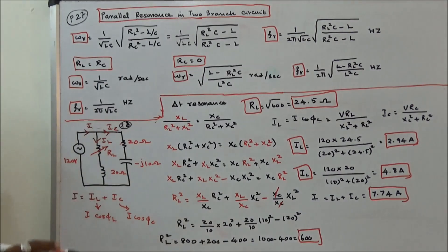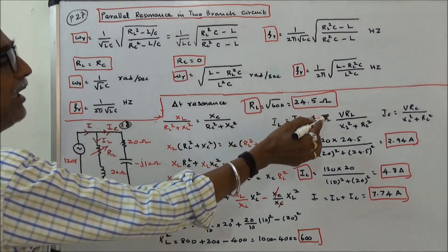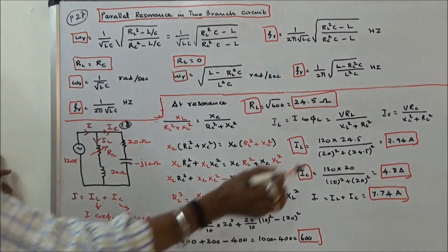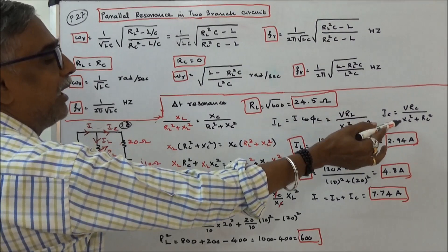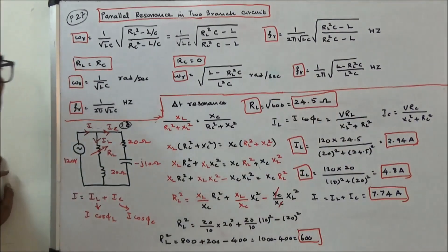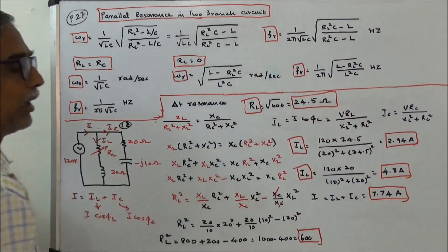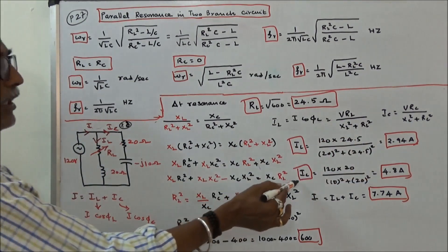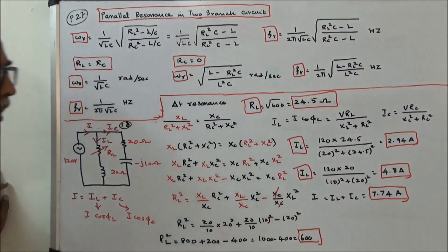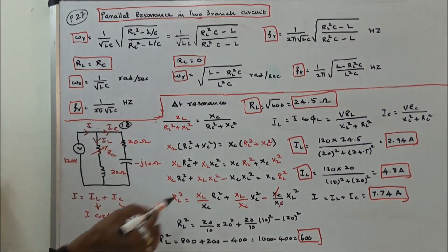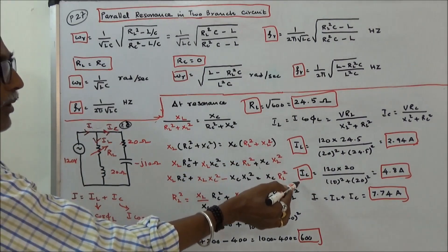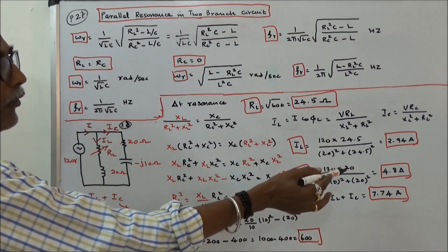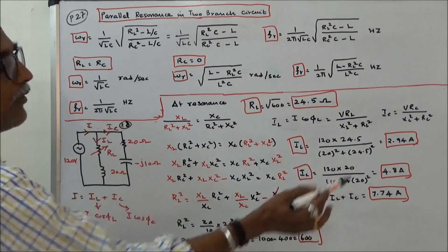Next we calculate I_L = V·R_L / (X_L² + R_L²) = 2.94 A, and I_C = V·R_C / (X_C² + R_C²) = 4.8 A. The supply current I = phase component of I_L + phase component of I_C = 2.94 + 4.8 = 7.74 A.